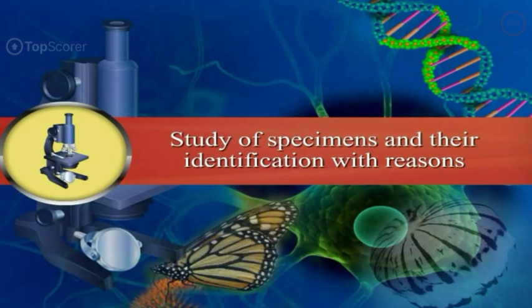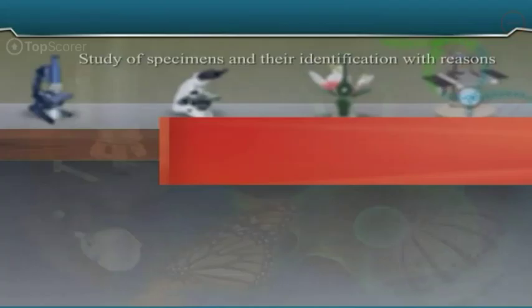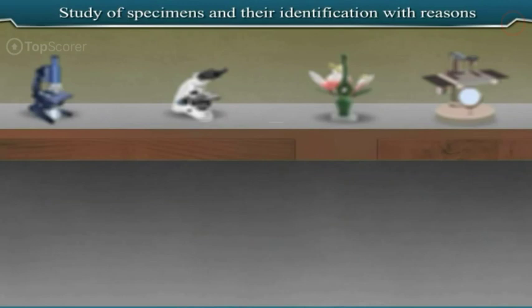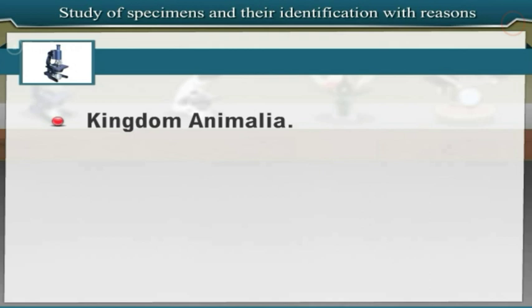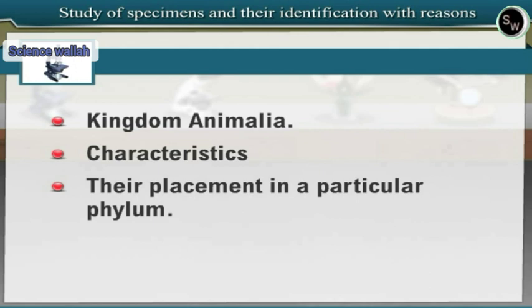Study of specimens and their identification with reasons. In this experiment, we will be learning about different specimens from Kingdom Animalia. We shall observe their characteristics and also study about their placement in a particular phylum. We will be learning about 18 specimens.